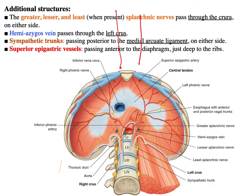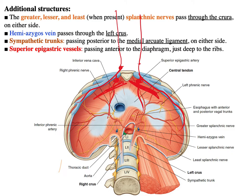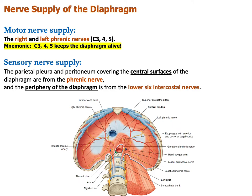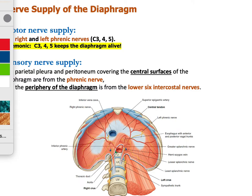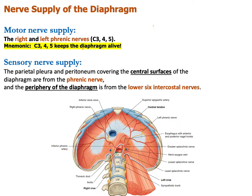The internal thoracic arteries divide into the superior epigastric artery and the musculophrenic artery. The superior epigastric artery passes just anterior to the diaphragm, between the ribs or costal cartilage and the diaphragm itself.